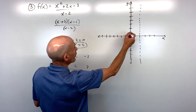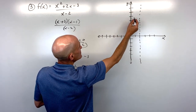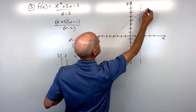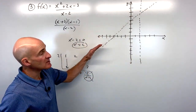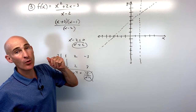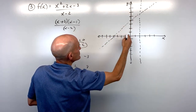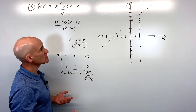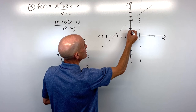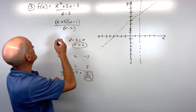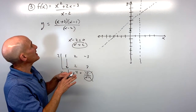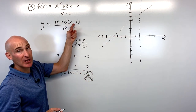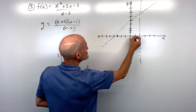Sketching the slant asymptote y=x+4: y-intercept at 4, slope of 1, so it goes at a 45-degree angle. For the y-intercept of the function: plug in x=0 to get -3/-2 = 3/2 = 1.5. For x-intercepts: set (x+3)=0 gives x=-3; set (x-1)=0 gives x=1.